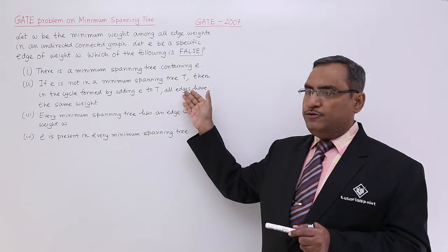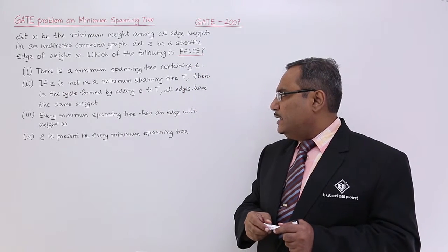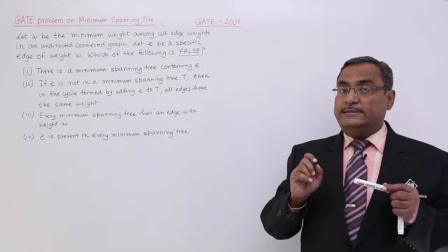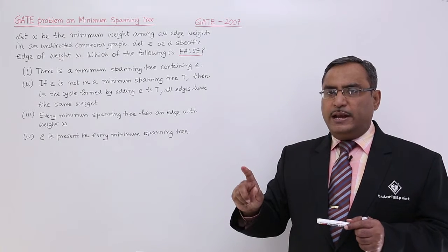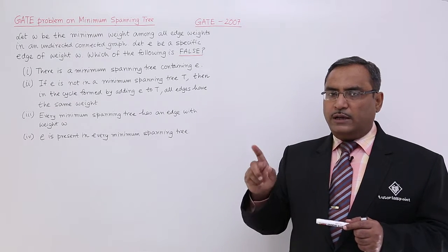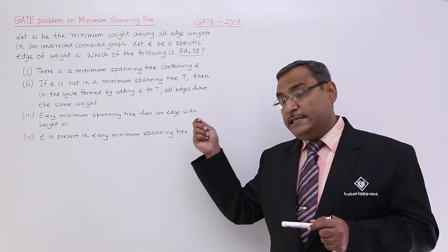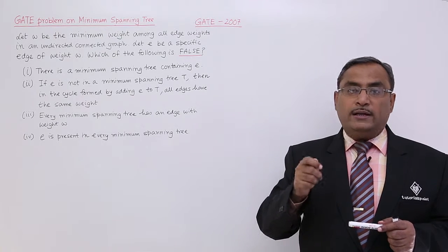This statement is highly true, the first statement is true. Every minimum spanning tree has an edge with weight W. Yes, that is guaranteed. As W is the minimum weight, in each and every minimum spanning tree solution from the given graph, each minimum spanning tree must be having one edge with the weight W.